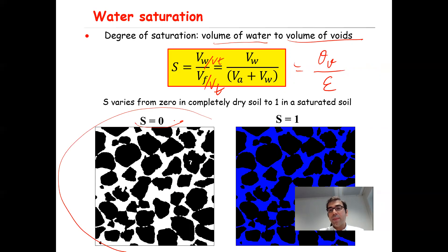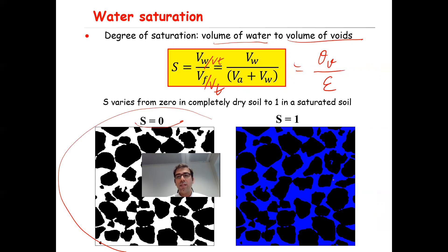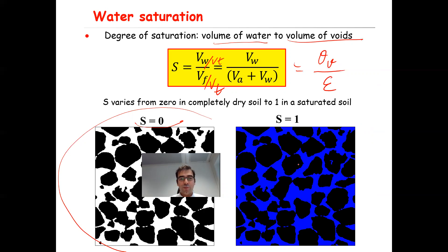On the other hand, if Va equals zero — if there is no air in the system — so Vw divided by Vw will basically equal one, and that's the maximum value of the saturation. You see here, the blue color is the liquid phase and the black color is the solid phase. So the saturation values range from zero to one, in the case of completely dry to fully saturated system, respectively.